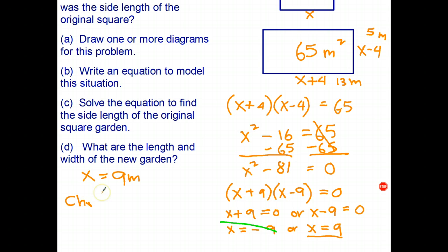As we do the check, we've now got an area of thirteen by five, which equals sixty-five. And that checks against the question. So therefore, that is the right answer.